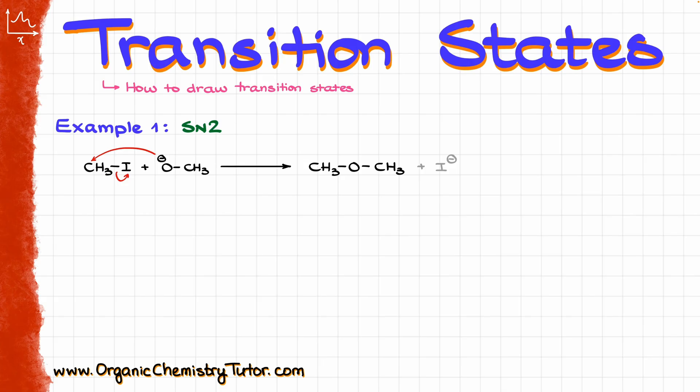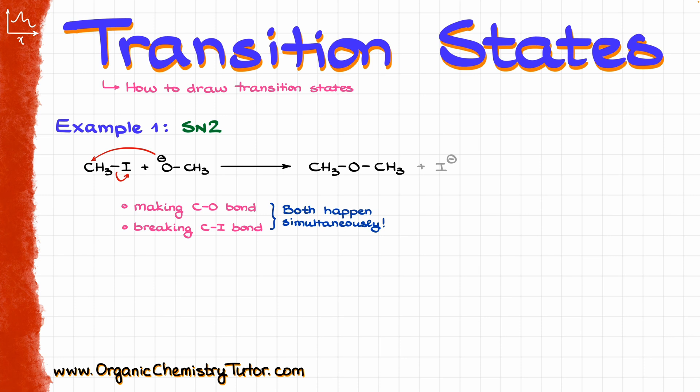We are doing two very important things in this reaction. First of all, we are making a new carbon-oxygen bond, and at the same time we are breaking the carbon-iodine bond. And both of those processes happen simultaneously, which means that we have to represent both of those things in our transition state, as we are not making any intermediates in this reaction.